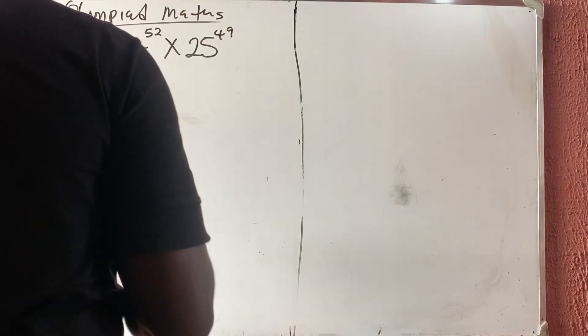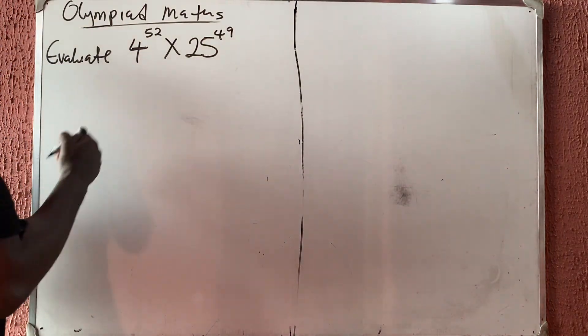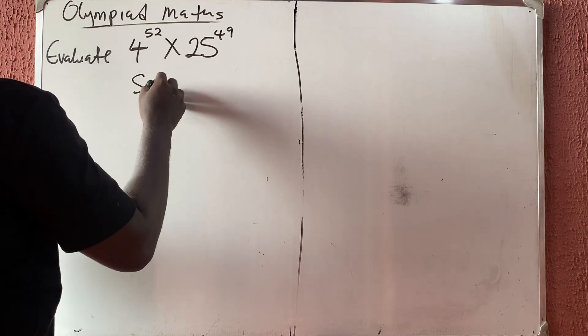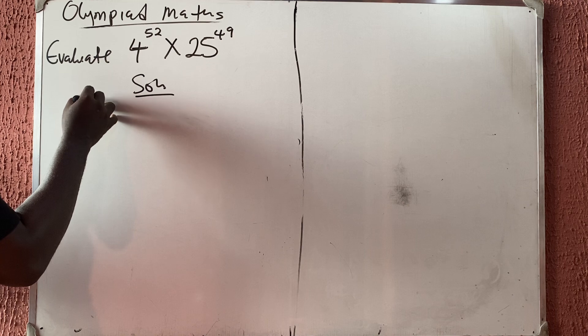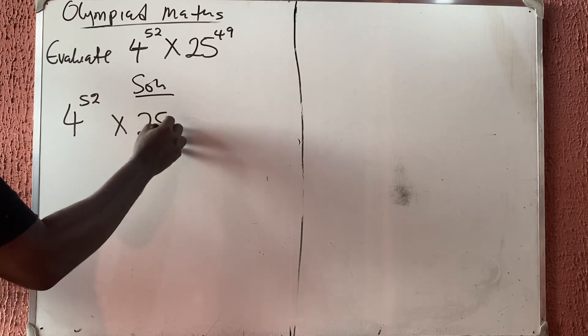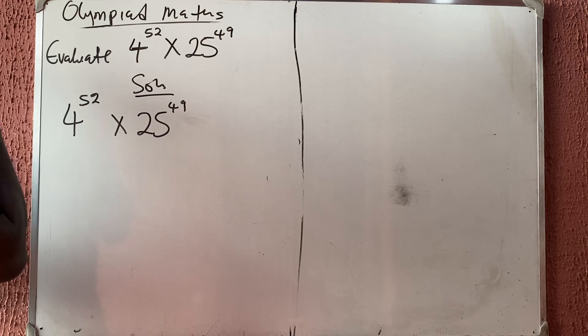Okay, look at this question. This is a very simple Olympiad question. They say 4 raised to power 52 times 25 raised to power 49. If you look at 52 and 49, they are very close.